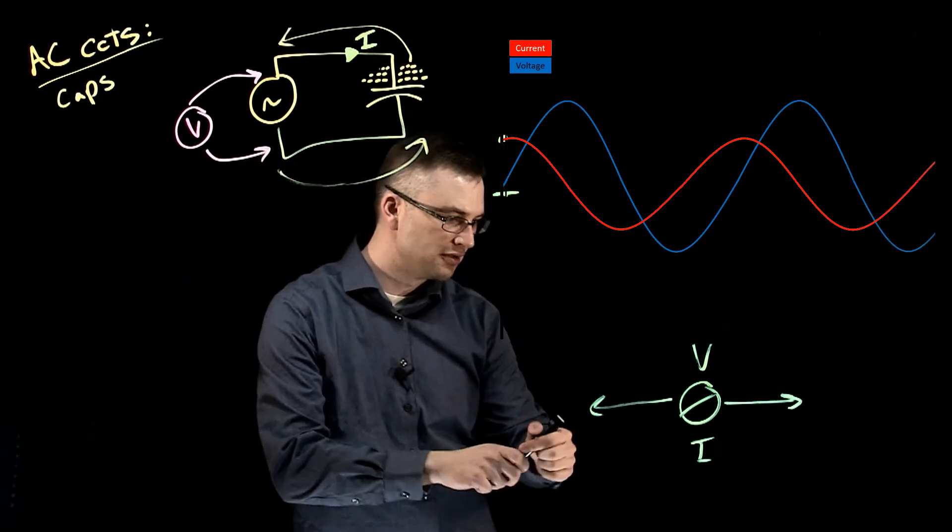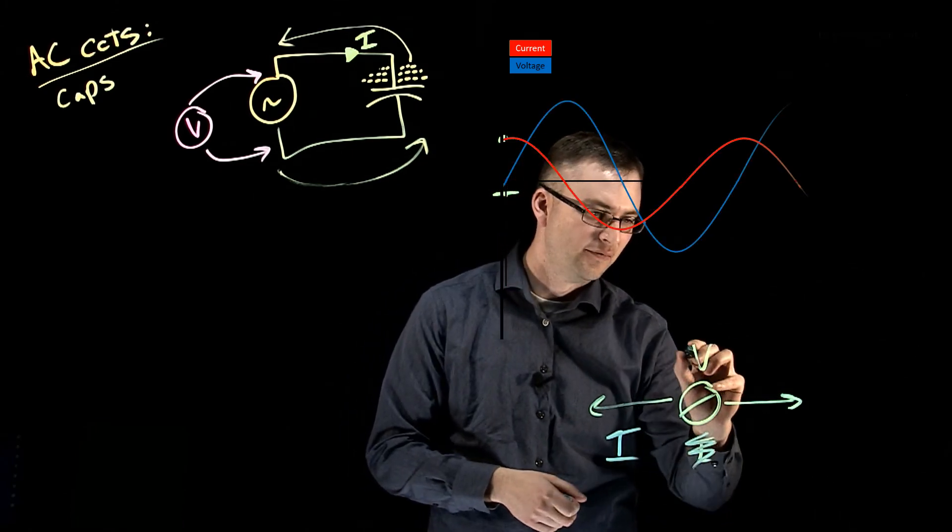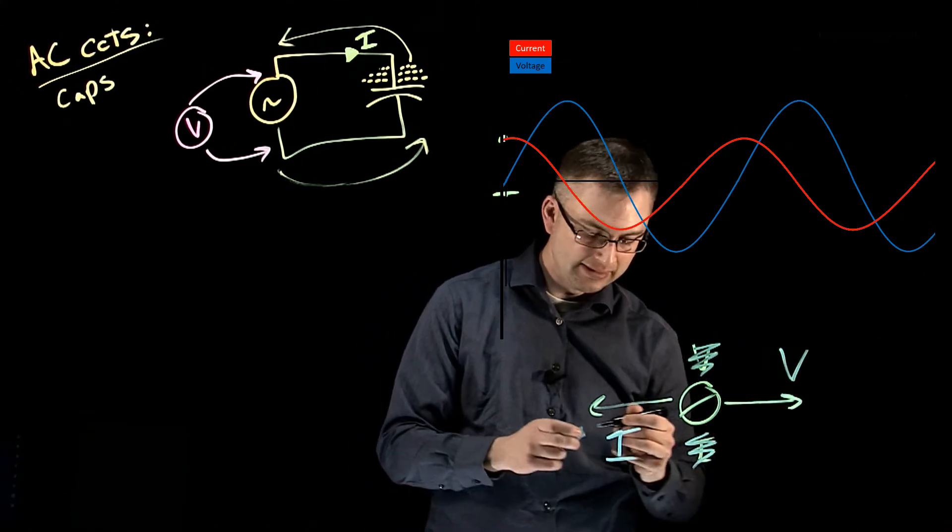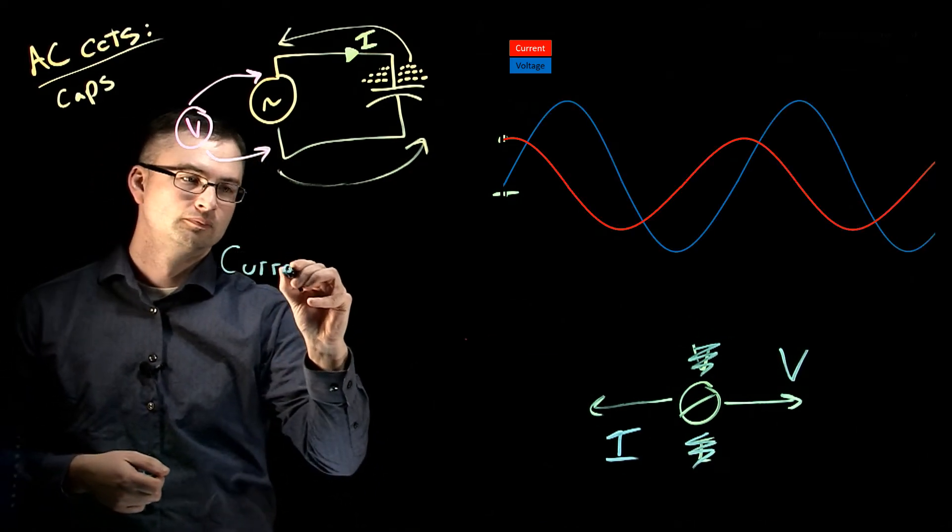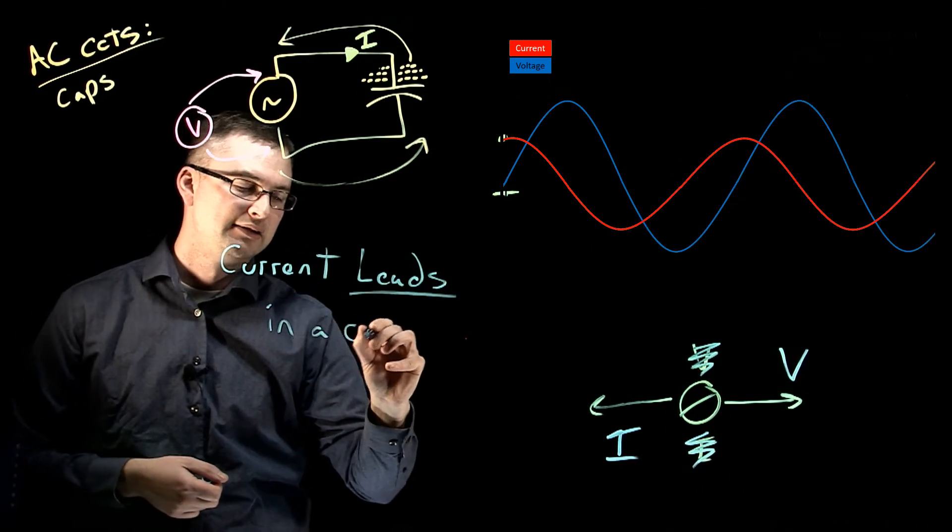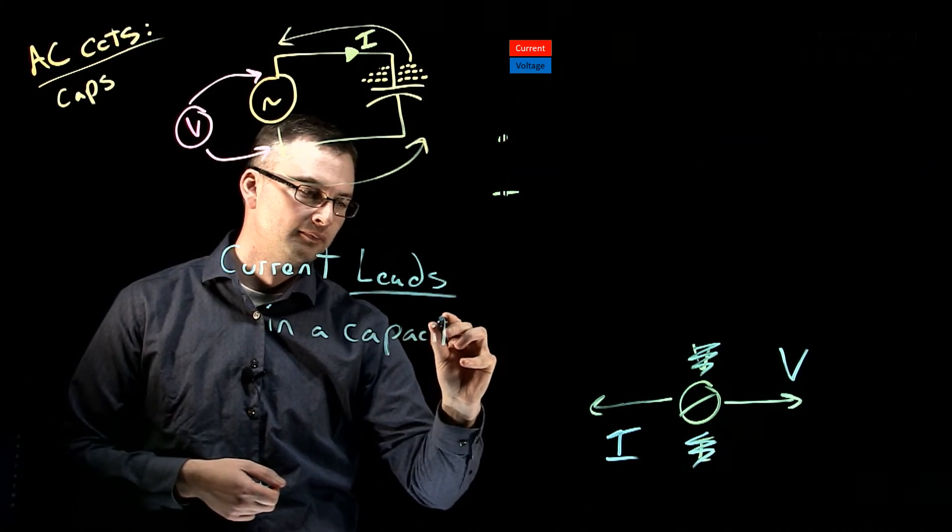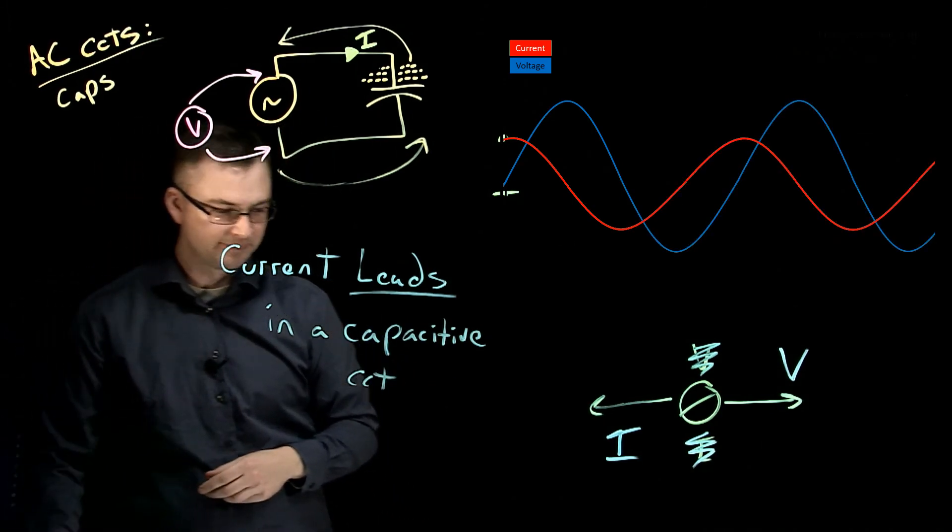So, we can go ahead here and take a look. Current is leading, and my voltage is lagging in this circuit. So, current leads in an AC capacitive circuit.